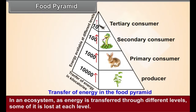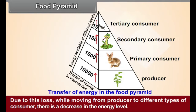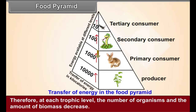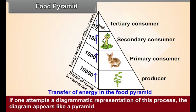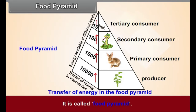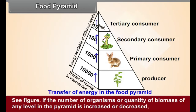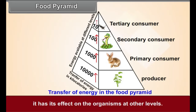Food Pyramid: In an ecosystem, as energy is transferred through different levels, some of it is lost at each level. Due to this loss, while moving from producer to different types of consumer, there is a decrease in the energy level. Therefore, at each trophic level, the number of organisms and the amount of biomass decrease. If one attempts a diagrammatic representation of this process, the diagram appears like a pyramid — it is called a food pyramid. If the number of organisms or quantity of biomass at any level in the pyramid is increased or decreased, it has its effect on the organisms at other levels.